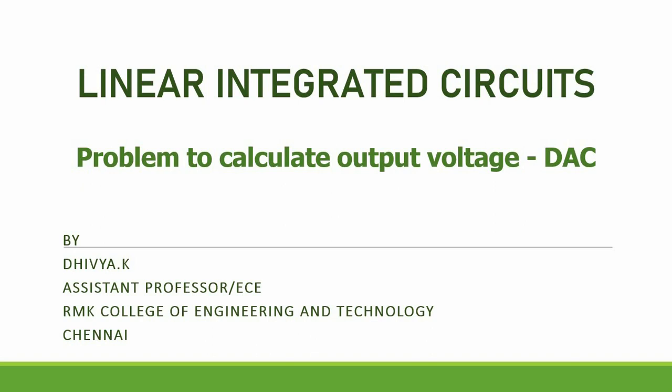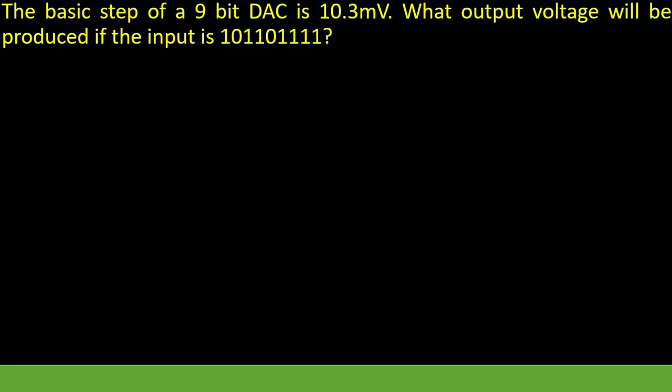This problem is to calculate the output voltage. The question is: the basic step of a 9-bit DAC is 10.3 mV. What output voltage will be produced if the input is a given 9-bit digital data? We have to calculate the analog output voltage of this DAC. The formula to find the output voltage of a DAC is,